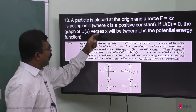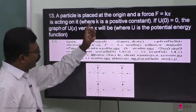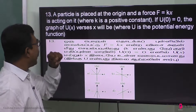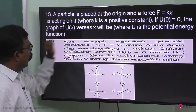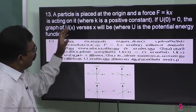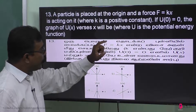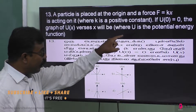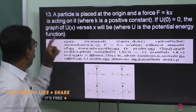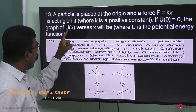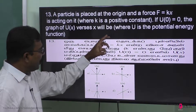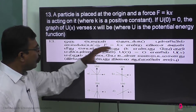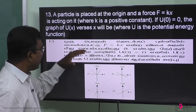A particle is placed at the origin and a force F is equal to k times x is acting on it, where k is a positive constant. If U(0) is equal to 0 — underline that, it is a very important condition — the graph of U(x) versus x will be which one?